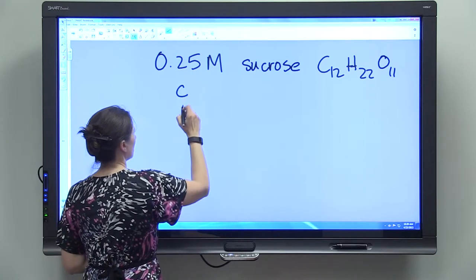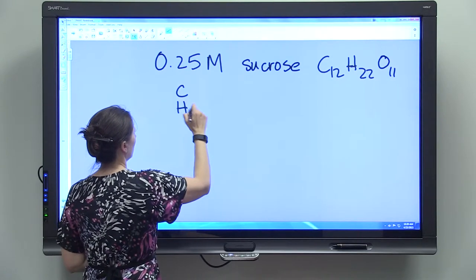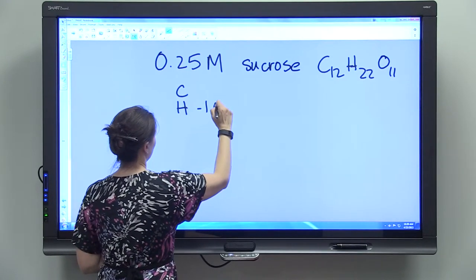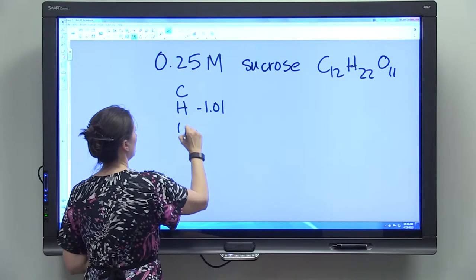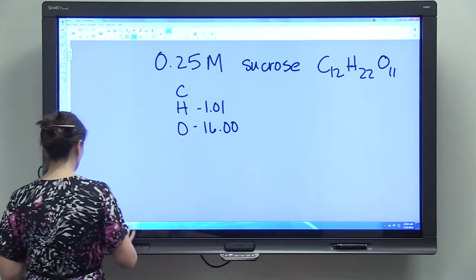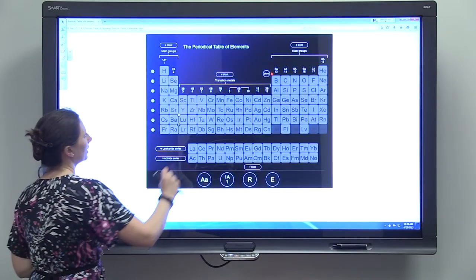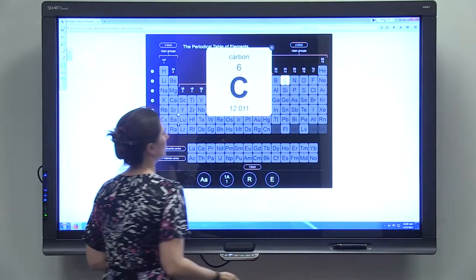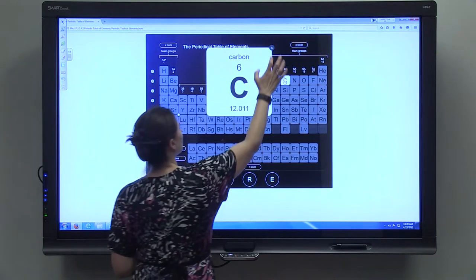We're going to find out the atomic mass of carbon. We know the atomic mass of hydrogen is 1.01. And we know the atomic mass of oxygen is 16. So let's just take a look at our periodic table. We see that carbon is 12.01.